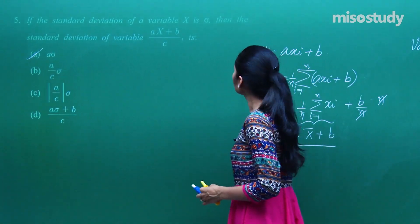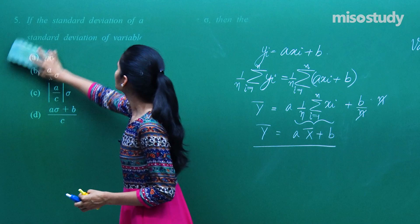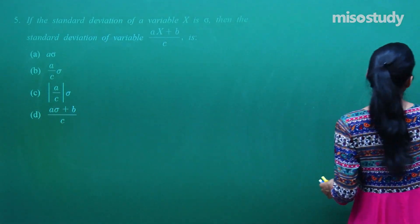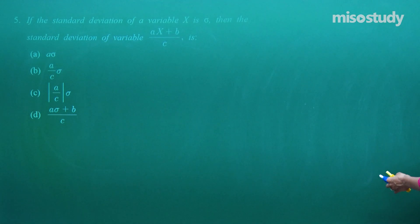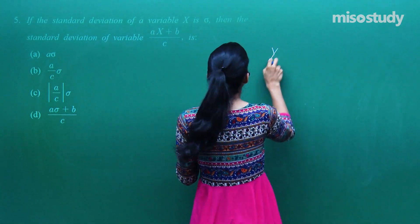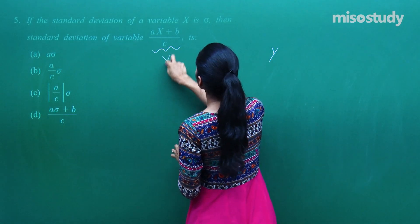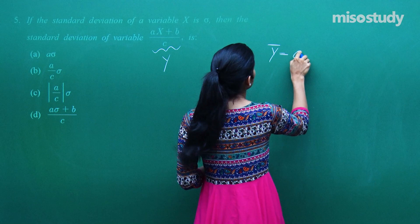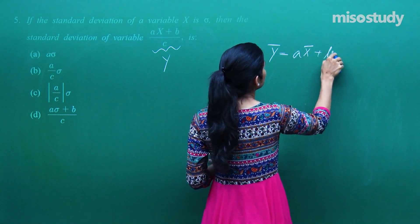If the standard deviation of variable capital X is sigma, then the standard deviation of variable ax plus b whole upon c will be what? Jaise ki hamne abhi ishi question mein jo argument dekhi, uske just pehle wale question mein, usse hum directly yeh keh sakte hain ki agar mein isko y le loon, to capital Y kya ho jayega? Or y bar kya ho jayega? ax bar plus b by c.